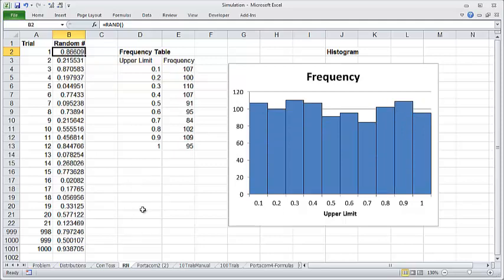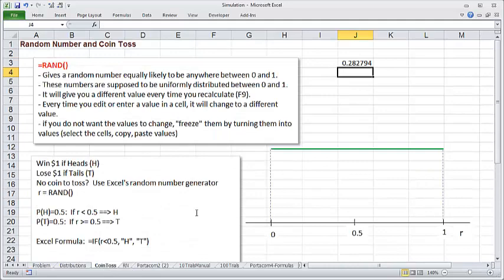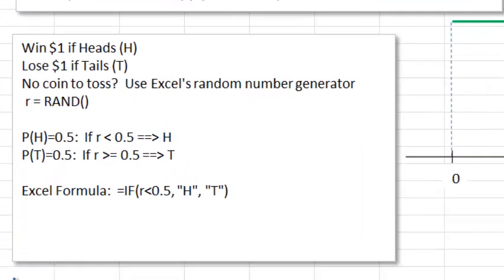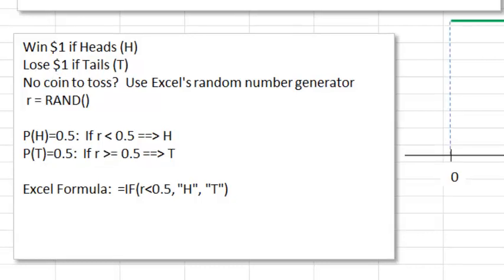Another kind of fun thing we could do is simulate a coin toss. Let's say you and your friend decide to play a game. You're going to toss a coin. And if it comes up heads, then your friend gives you a dollar. And if it comes up tails, then you have to give your friend a dollar. The only thing is, you don't have any coin with you. But we could use Excel to simulate the coin tosses using the random numbers.